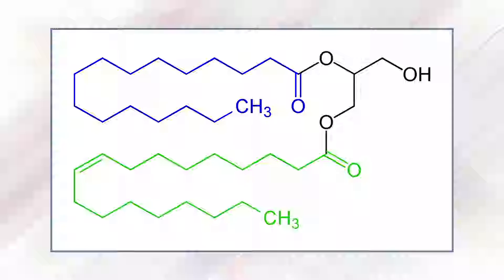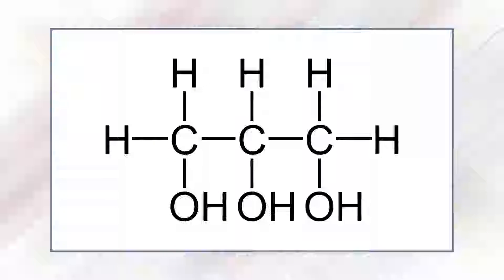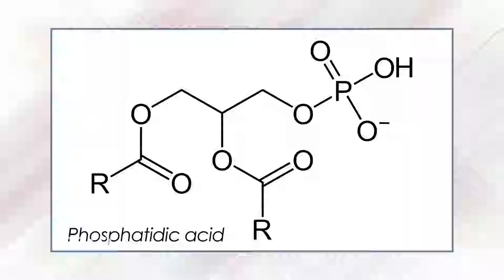Membrane glycerides are diglycerides — only two of the hydroxyl groups of glycerol are esterified to fatty acids, and the third is esterified to a hydrophilic phosphate group. Without any additional substitutions beyond the phosphate and the two fatty acyl chains, the molecule is called phosphatidic acid, which is virtually absent in most membranes.